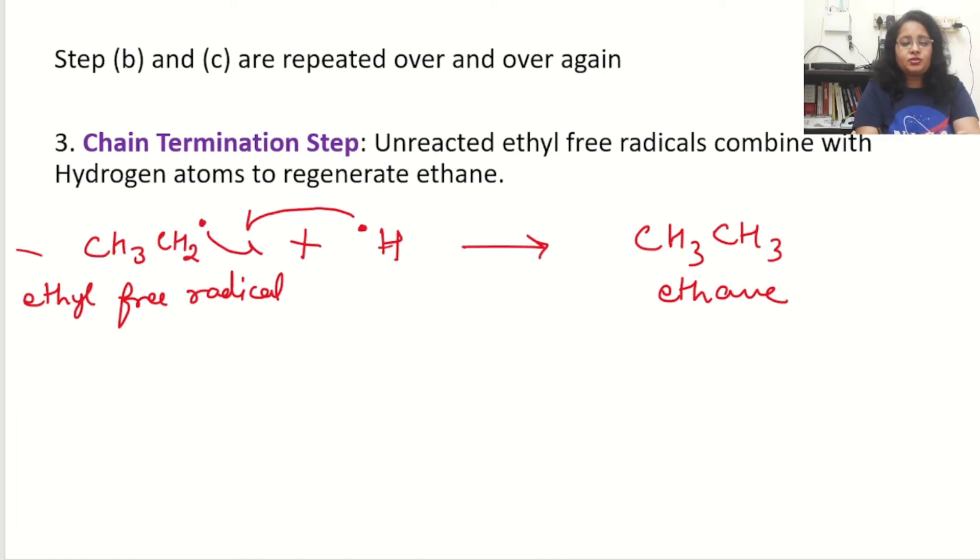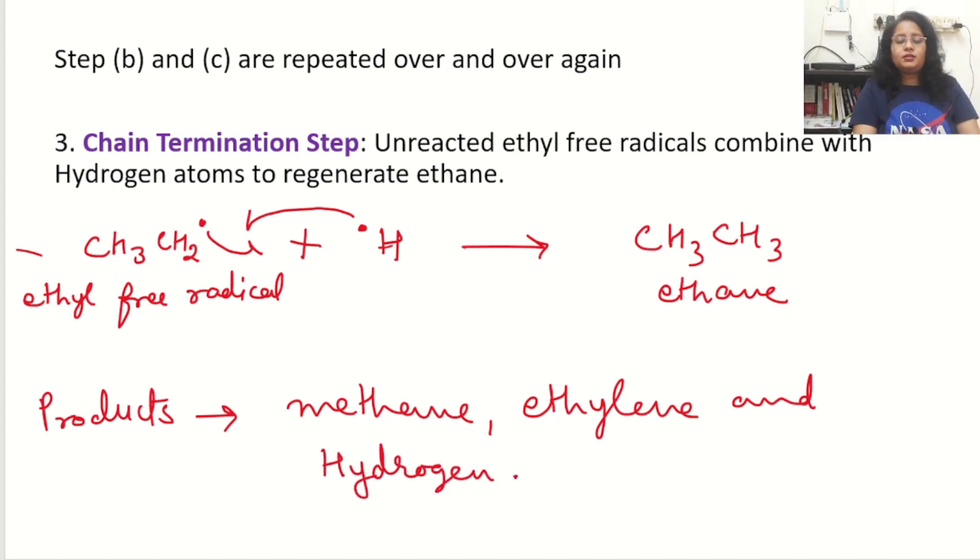So we can get the mixture of methane, ethylene and hydrogen. The products are methane, ethylene and hydrogen. This is the cracking of the alkane to the lower alkane, alkene and hydrogen. This is called cracking and overall this process is called pyrolysis.